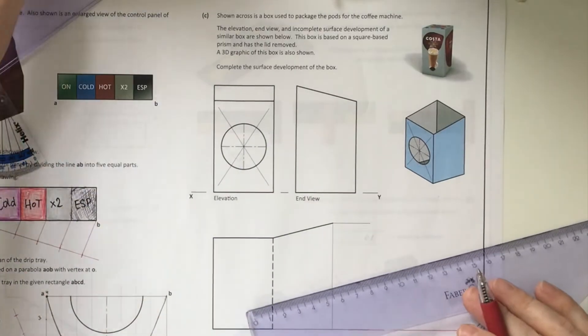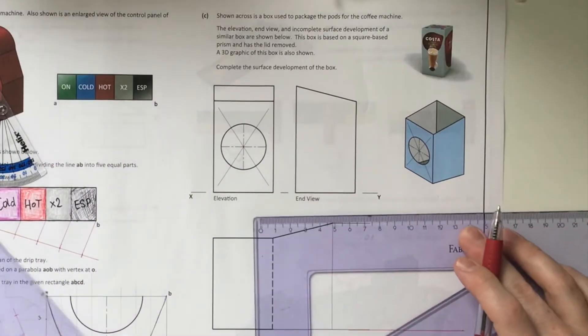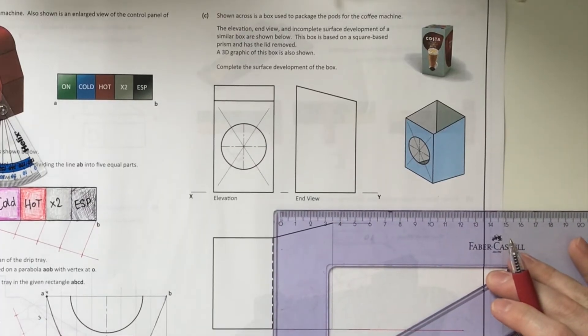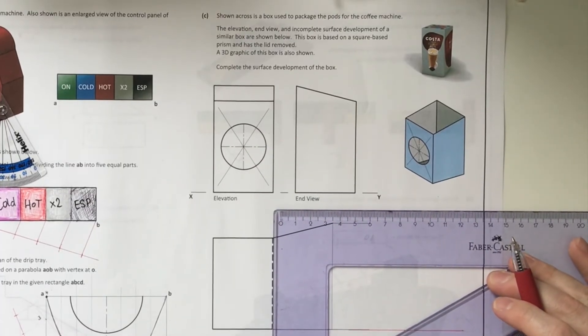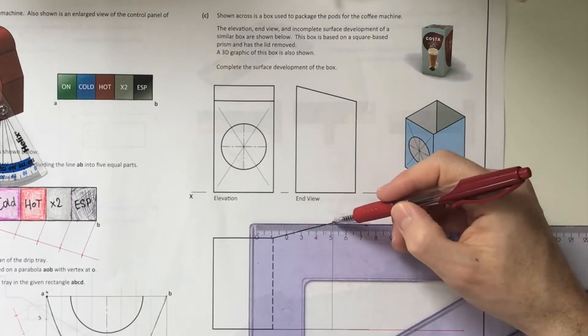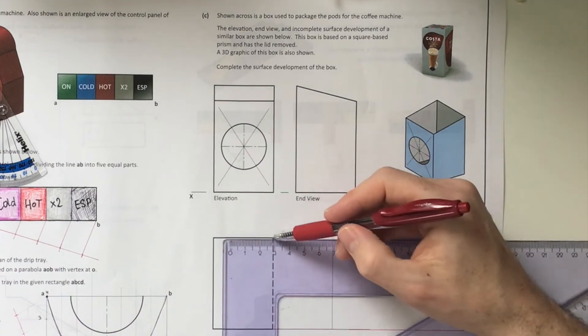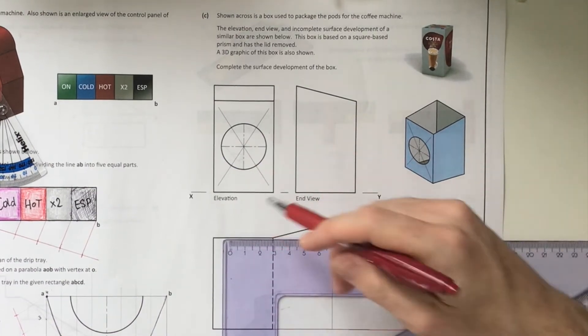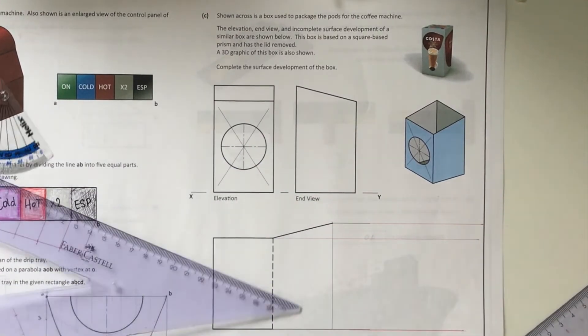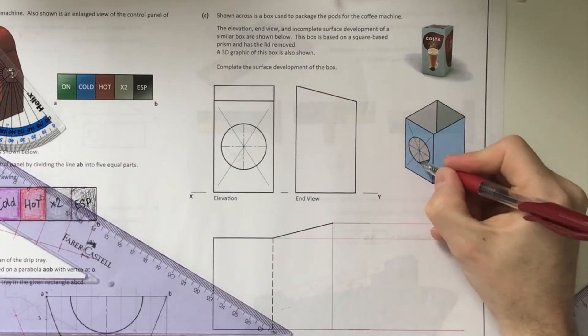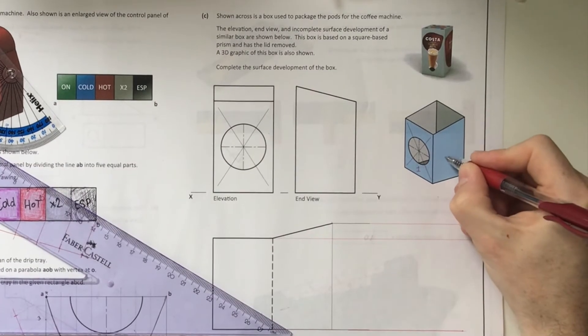All I'm doing is extending my lines. This is when I realized the sheet is not on correctly, so I'm using my sliding set squares. But I'm just extending my lines down as if I'm completing a plan or an elevation or whatever. I'm extending all my relevant points down.